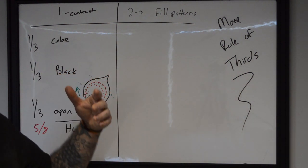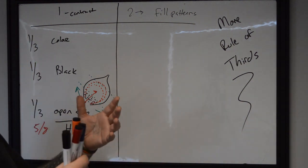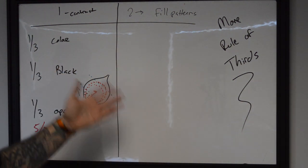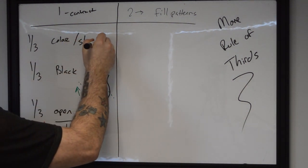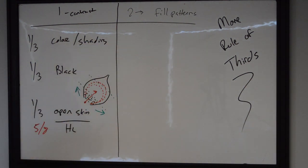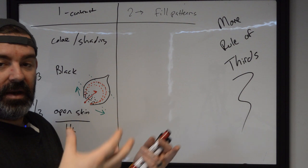If we stick to that, we're going to end up with a really strong color piece. If we want to do it with shading, we're going to do the same thing. We're going to do one-third black, one-third shading, and one-third open skin or highlights. This is just going to make something that just has enough meat to be seen at a distance.